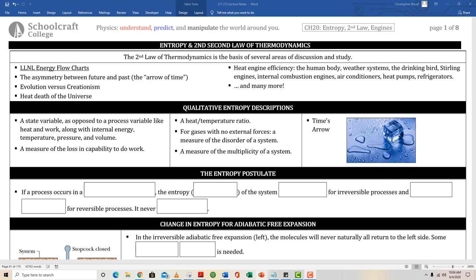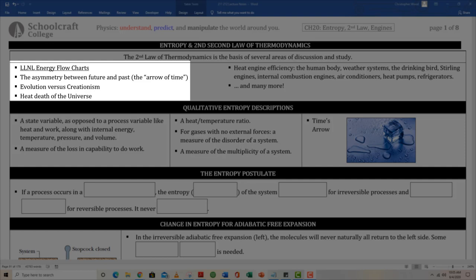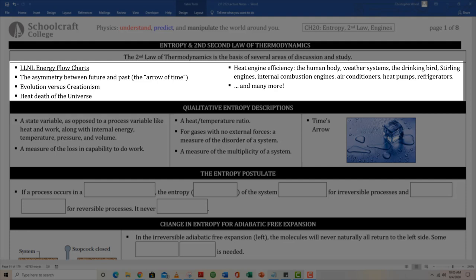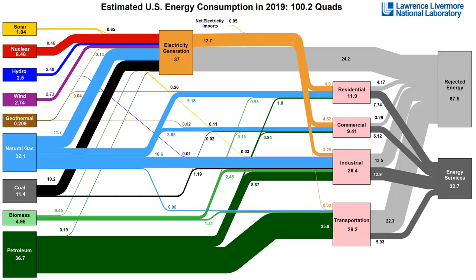This is an exceptionally deep and wide subject. Topics addressed with entropy and the Second Law of Thermodynamics include: the asymmetry between future and past, also known as the arrow of time; evolution versus creationism; heat death of the universe; and heat engine efficiency. There are a great many varieties of heat engines, including the human body, weather systems, the drinking bird, Stirling engines, internal combustion engines, air conditioners, heat pumps, and refrigerators. So entropy and the Second Law addresses issues as practical as your lawn mower's engine efficiency, all the way up to evolution versus creationism debates and the ultimate heat death of the universe.